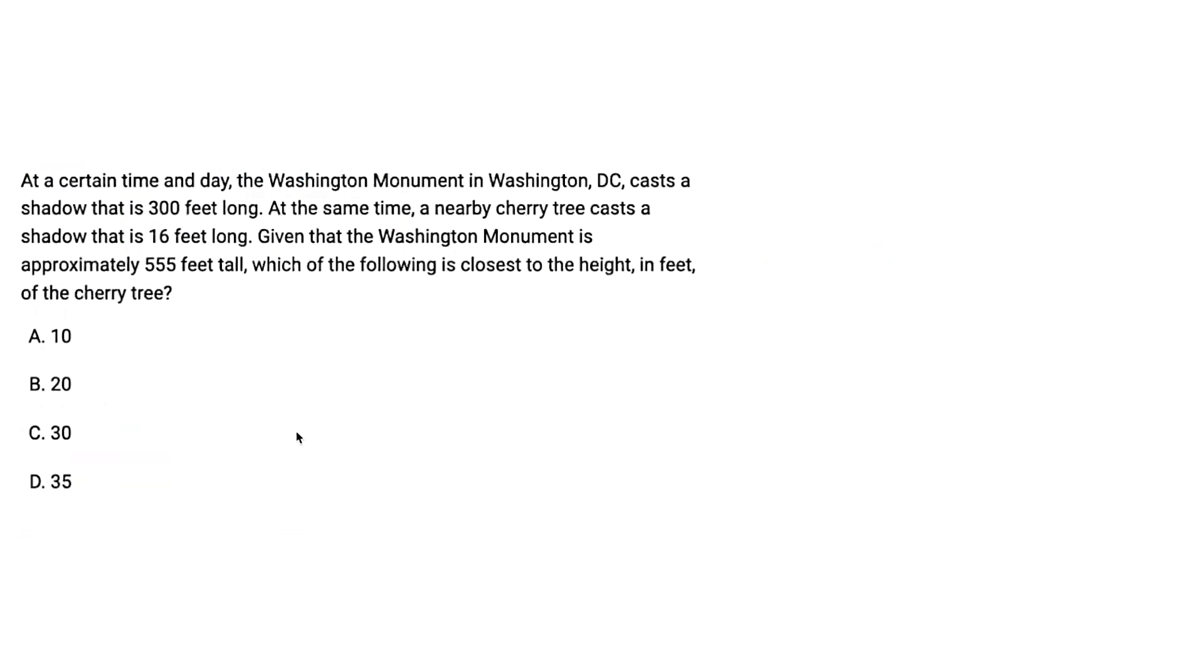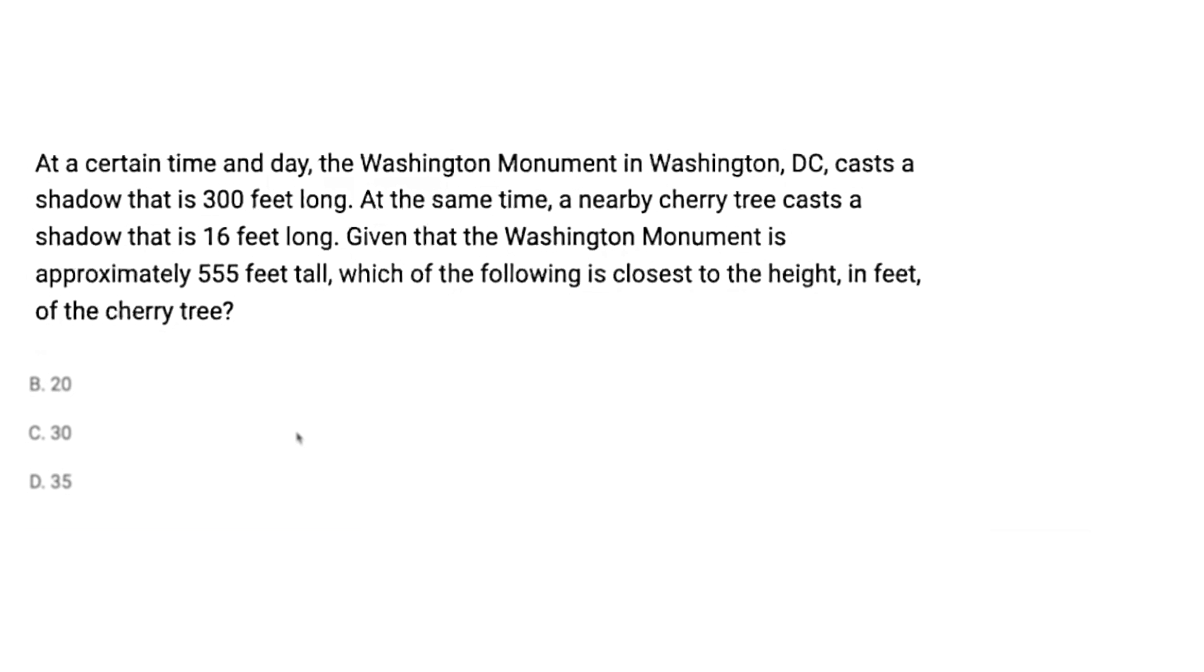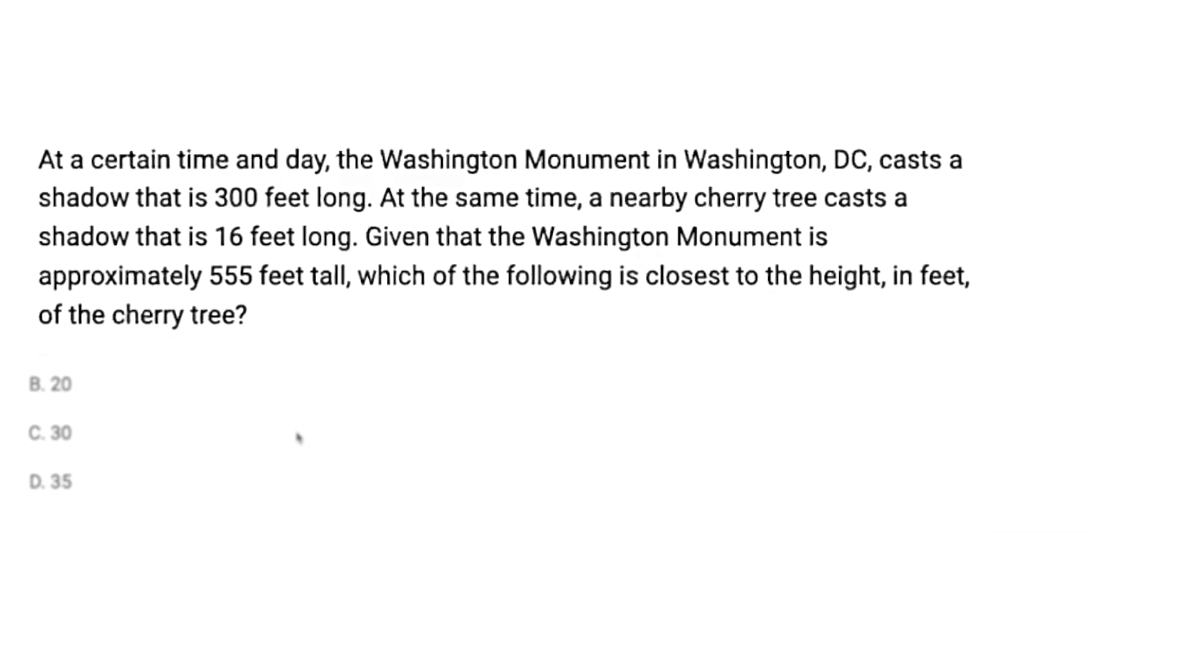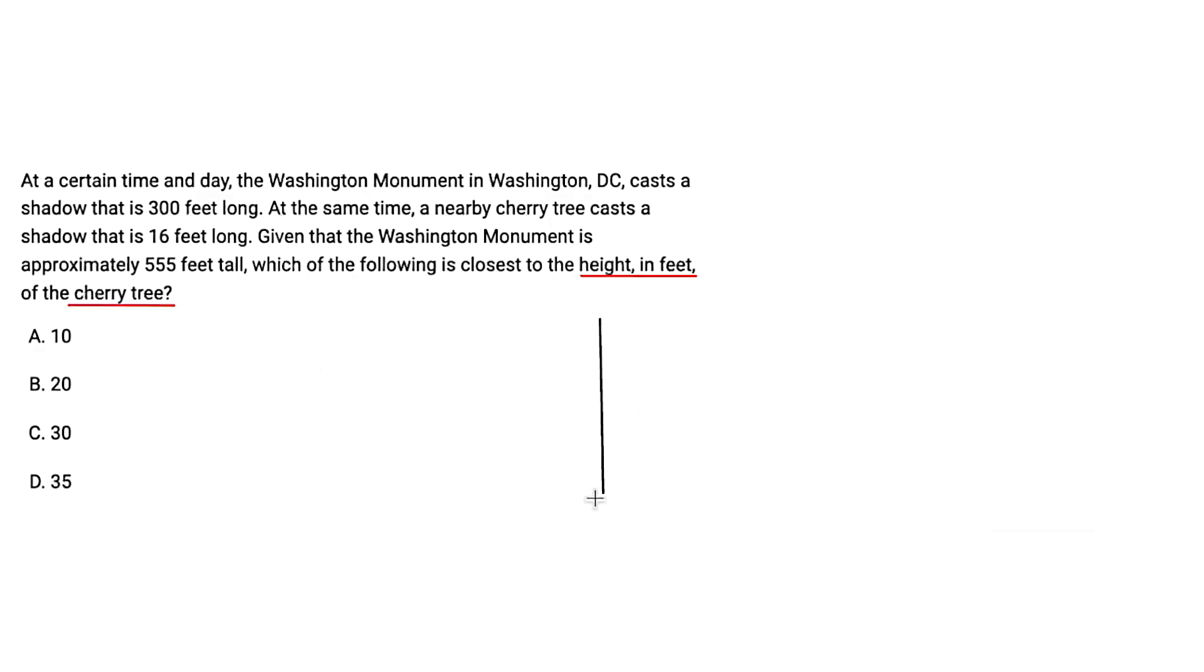Let's do one more easy question. Which of the following is closest to the height of the cherry tree? So we know that's our goal. Washington Monument casts a shadow that's 300 feet long. So let's draw this out. This is going to be the monument, and then the shadow would go across the ground, 300 feet long. At the same time, a nearby tree casts a shadow that is 16 feet long. Because it's the same time of day, they're casting the same angle of shadow. And we're looking at two similar triangles.